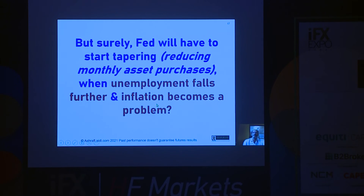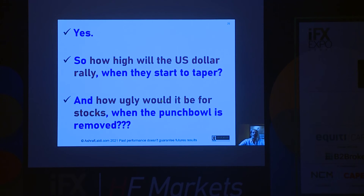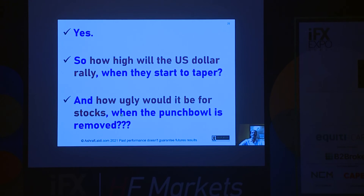So how high will the U.S. dollar rally when they start to taper? Eventually they're going to start tapering or signaling. How ugly would it be for stocks? Yields are suppressed, stocks are elevated — it might be a bubble. When the Fed says it's going to start tapering, they'll try to do it as discreetly as possible, but there will be an adjustment: the dollar will rise and markets will fall.